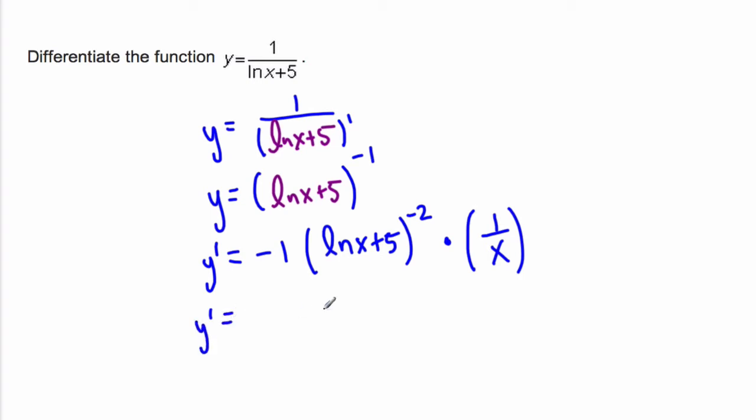Rewrite it a little bit. We have, this will end up going down, so we'll have minus 1 over x, coming from here, that's the x, ln x plus 5, squared.